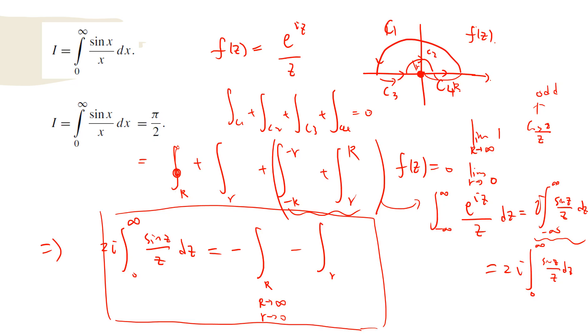So one consideration I want to talk to you about is that when R goes to infinity, this large arc will be 0. And the reason is that if you take z equals R exponential i theta, then this term will become exponential minus r sine theta.